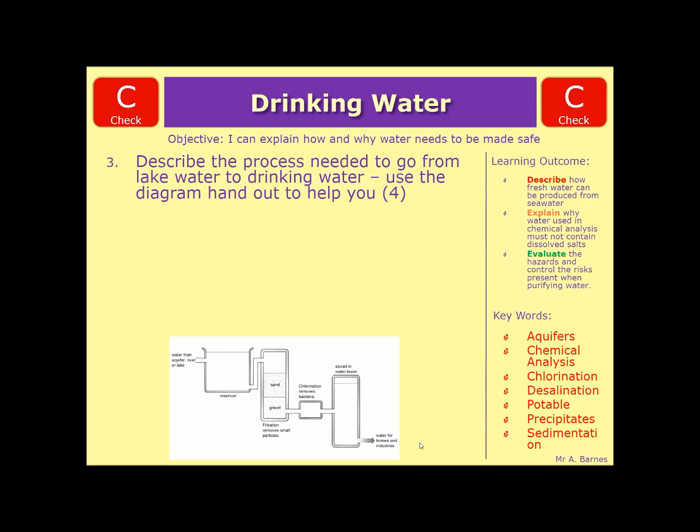Question three: describe the process needed to go from lake water to drinking water. Use a diagram handout to help you. So this is the diagram here. The first one is your sedimentation, so it's remembering that keyword, which again is down here, which means the small particles are left to settle at the bottom. So giving you a description of that also gives you a mark.